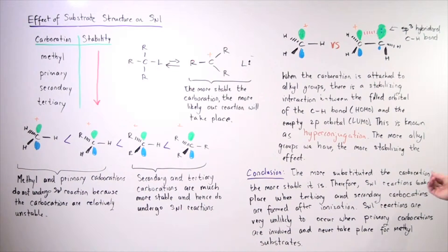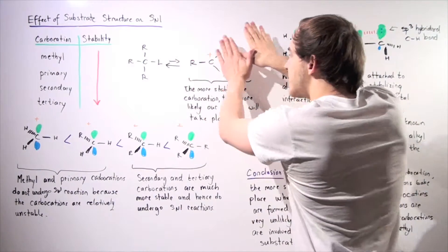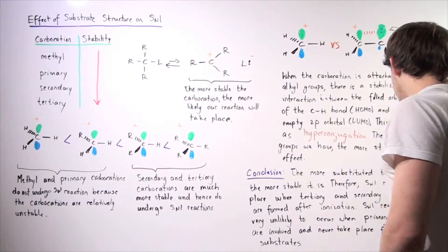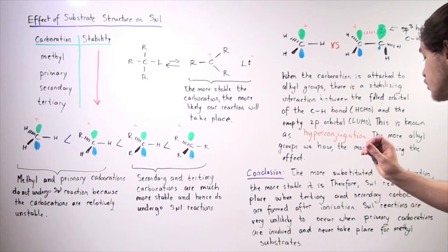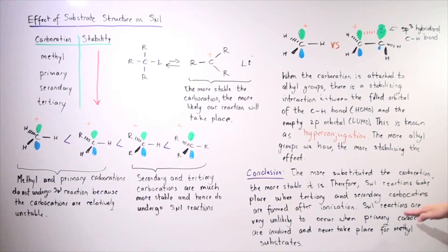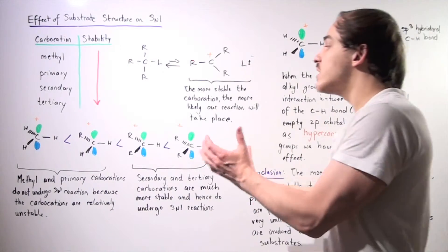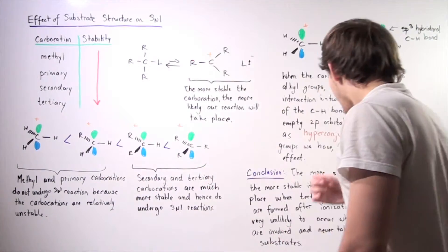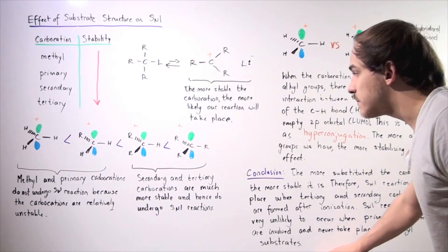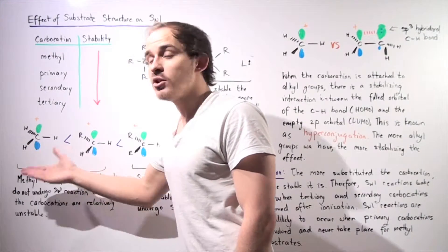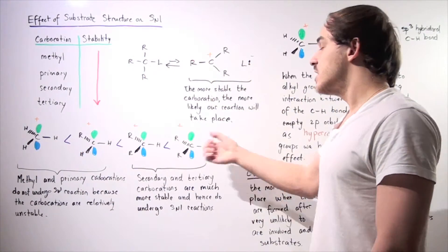SN1 reactions take place when tertiary and secondary carbocations are formed from the first ionization step. So the more stable this is, the more likely our SN1 reaction will take place. Now SN1 reactions are very unlikely to occur when primary carbocations are formed because they're relatively unstable, and they never or almost never take place with a methyl substrate because they're so unstable compared to these carbocations.